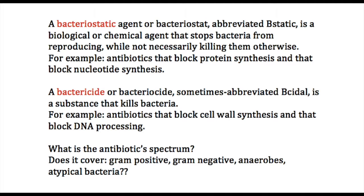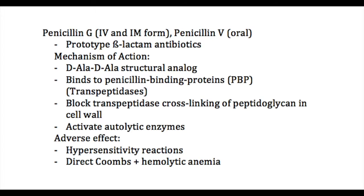With that little introduction, we're going to start talking about cell wall antibiotics. These include the beta-lactam antibiotics, so named because chemically they have a ring known as the beta-lactam ring. These include the penicillins, the cephalosporins, and the carbapenems. Other cell wall antibiotics include aztreonam, which is a monobactam and is structurally different, and vancomycin, which is also structurally different.